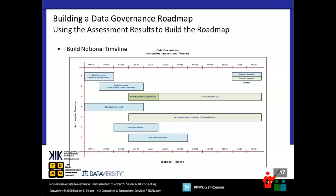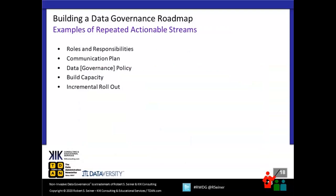Typically I suggest that phase one is the assessment, the roadmap, the development of the communication plan, and the roles and responsibilities. When we get to phase two, we start to formalize these things, socialize them to the organization, and test them during proof of concept activities. The notional timeline may look different for your organization, but the idea is to put timelines so people understand what you're doing, when you're going to do it, and when it will be effective.